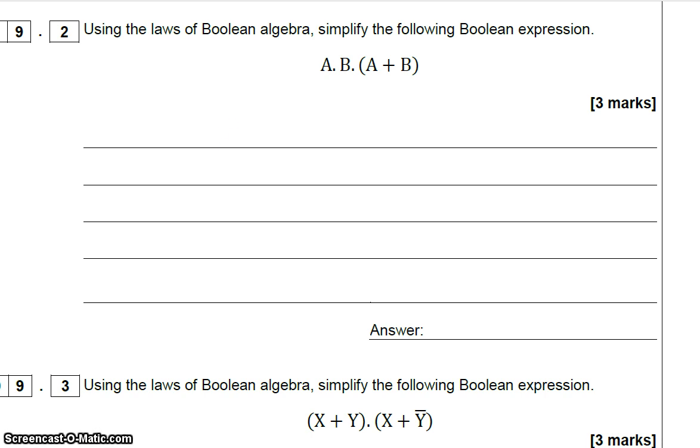So this becomes A and B and A, or A and B and B. So we've taken that part and multiplied it by that, and multiplied it by that. This follows factorising in maths, the same kind of idea, multiplying out brackets.